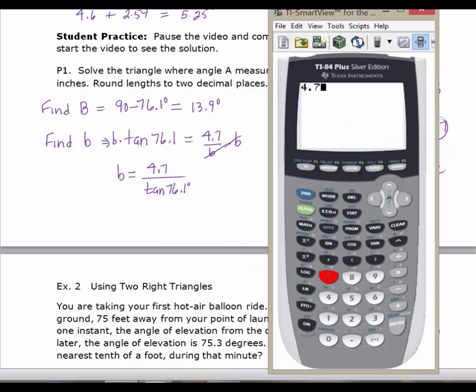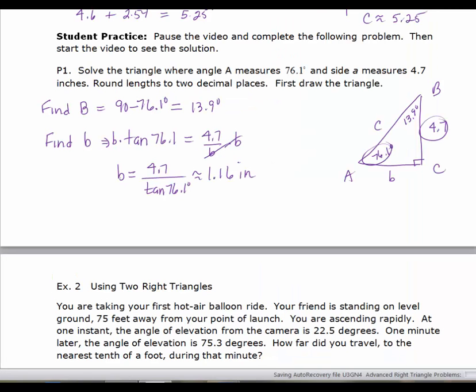We'll evaluate that on the calculator: 4.7, still in degree mode, tangent of 76.1 degrees. We're asked to round lengths to two decimal places, so the length of side b is approximately 1.16. So b is approximately 1.16 inches.